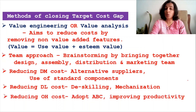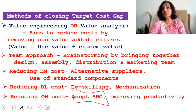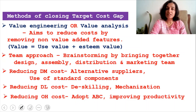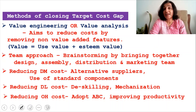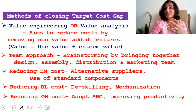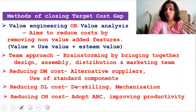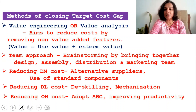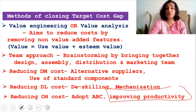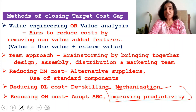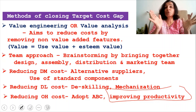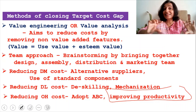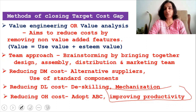Another method is reducing the overhead cost by adopting the activity-based costing approach. Activity-based costing segregates overheads based on cost pools and identifies the cost driver, making it very easy to identify what is causing the overheads. If you reduce the number of cost drivers, the cost can be drastically reduced. And by improving productivity — if one person can produce more units — the overheads get distributed between a larger number of units, which means the cost per unit will come down.